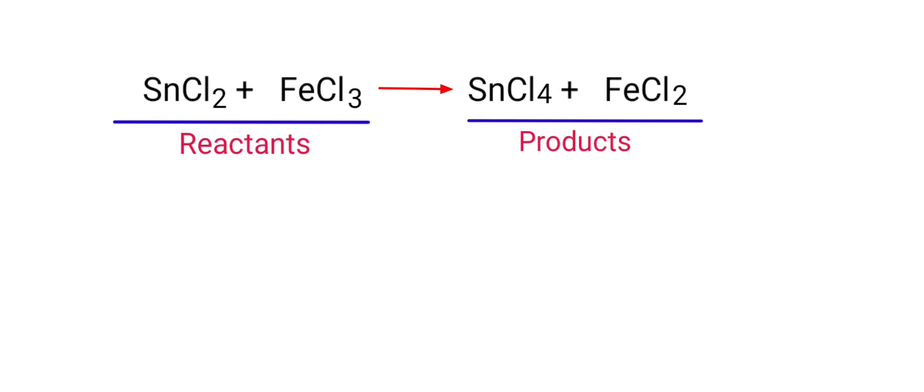In this equation, the reactants are Tin 2 Chloride and Iron 3 Chloride, and the products are Tin 4 Chloride and Iron 2 Chloride.